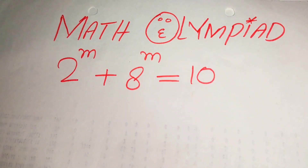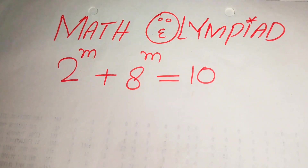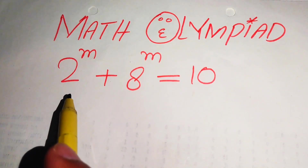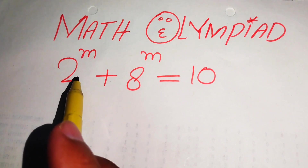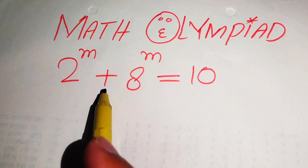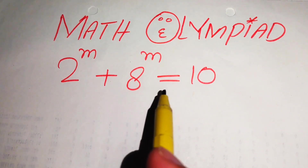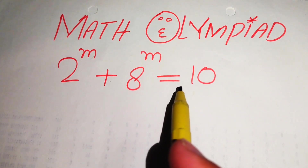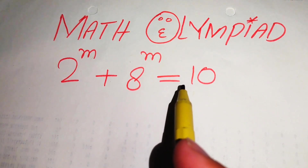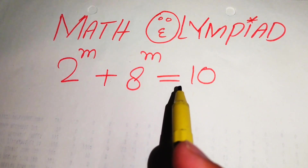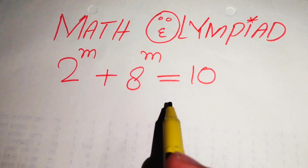Hello everyone, welcome. We will solve this math lumped exponential equation problem. Here we have 2 to the power of m plus 8 to the power of m equals 10, and we solve this problem for the real values of m.